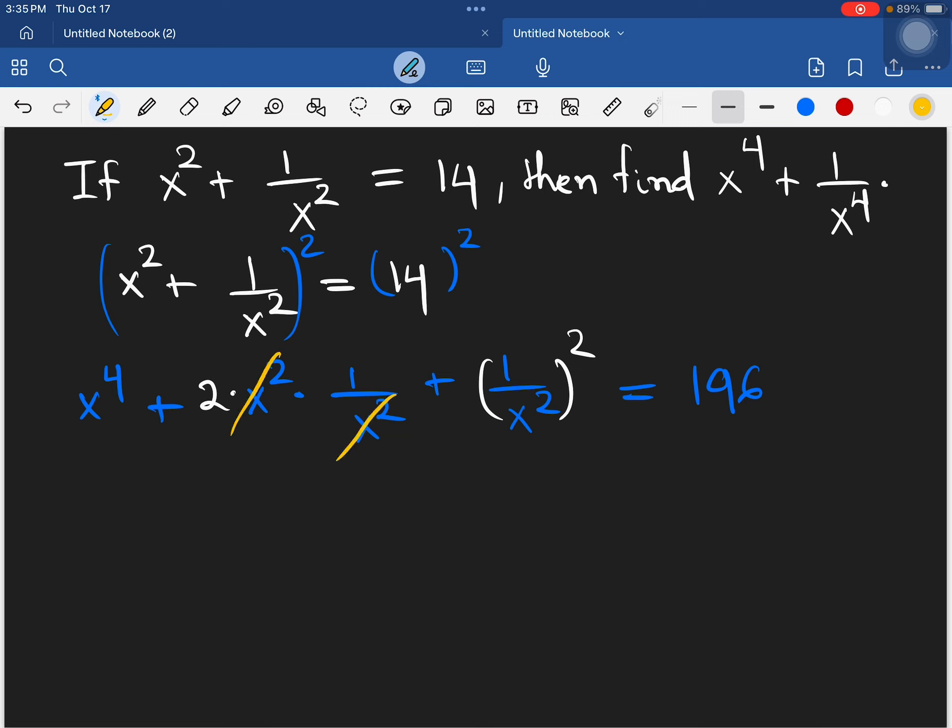When we expand x power 2 plus 1 over x power 2 squared, we get x power 4 plus 2 times x power 2 times 1 over x power 2 plus 1 over x power 4. So x power 4 plus 2 plus 1 over x power 4 equals 196.